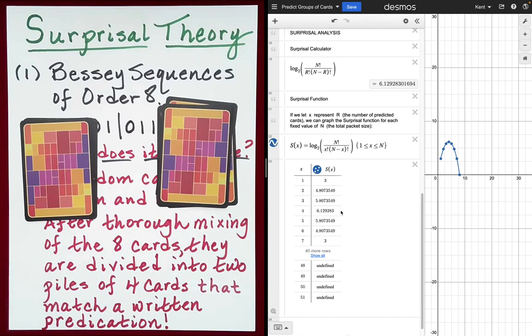And as you might imagine, that is also the maximum surprisal value for selecting a group of cards from a packet of eight cards. Any smaller or larger selection of cards will lead to a lower surprisal value than we achieved in all of our performances with Bessey sequences of order 8.